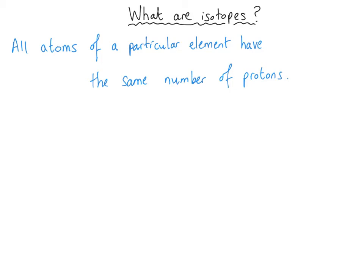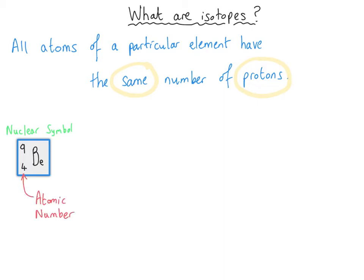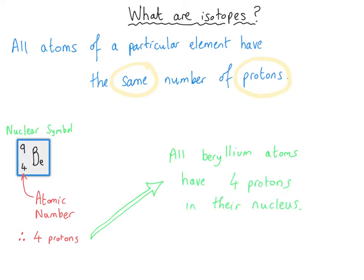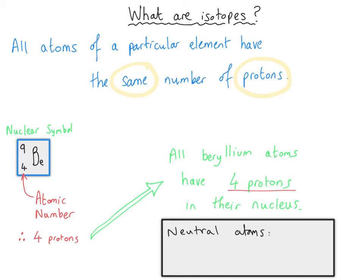Hopefully, you should already remember that all the atoms of a particular element will have the same number of protons. So if we consider an element, for instance beryllium, we know from the nuclear symbol shown here that beryllium has got an atomic number of four, which means it will have four protons, and so all of the atoms of beryllium will have four protons in their nucleus, and they will also have four electrons as well, assuming that they are neutral atoms.